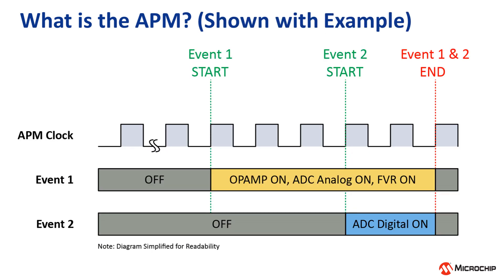In this device family, the APM has two start and two stop events that can be generated for more complex behavior. The peripherals enabled or disabled at each event are configurable for flexibility.